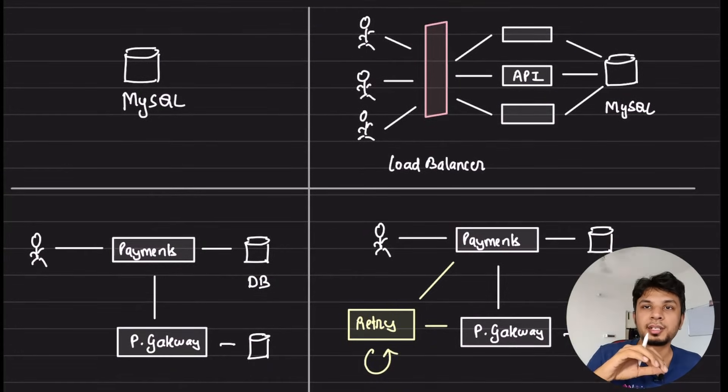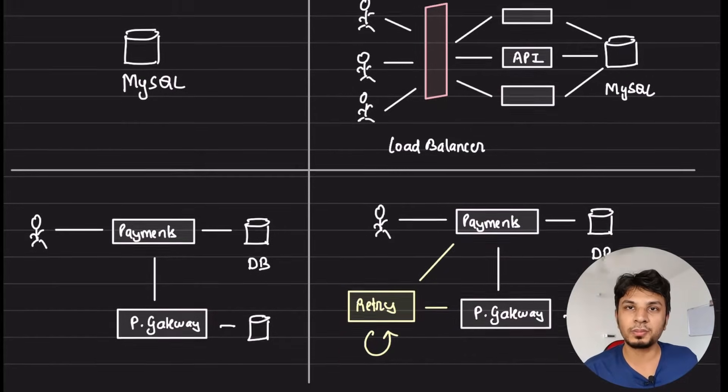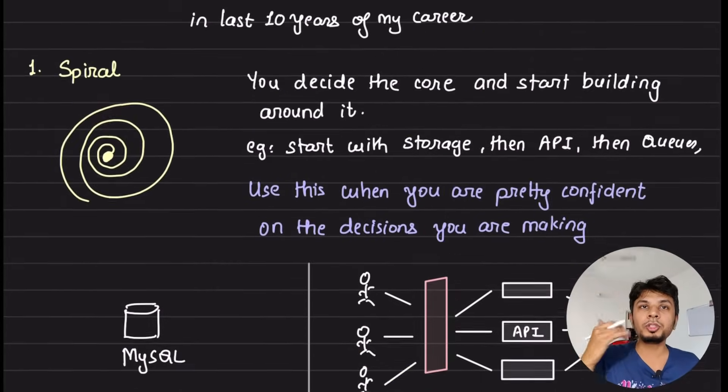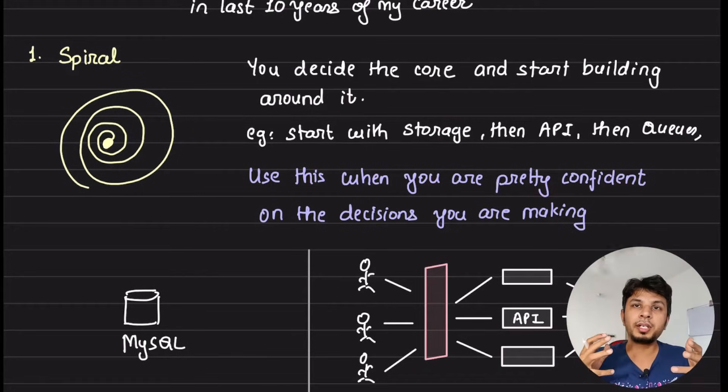Then you evolve to the next part where you say now I have this service, now I need another service. For example, this is the first step that you started with a simple database, then you added a very simple way to interact with that, this forms the core. Then you evolve, you say I need a couple of services to interact with each service having its own database, let's say payment and a payment gateway. The next part is you have a payment, you need a retry mechanism to retry the failed payments. So this is how you would evolve your system.